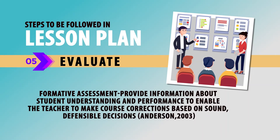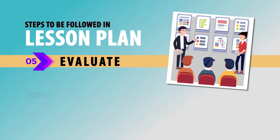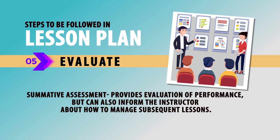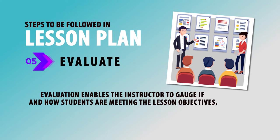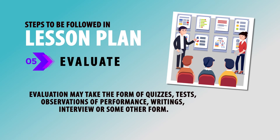Evaluation requires two ways: Formative and Summative. Formative provides information about students' understanding and performance to enable the teacher to make course corrections, based on sound, defensible decisions. Summative provides evaluation of performance, but can also inform the instructor about how to manage subsequent lessons and future performances. Evaluation enables the instructor to gauge if and how the students are meeting their lesson objectives. Evaluation may take the form of quizzes, tests, observations of performance, writings, interviews or some other form.